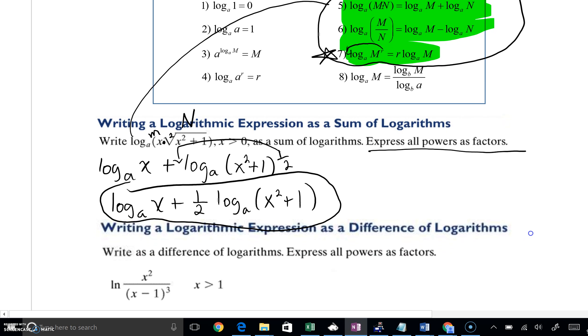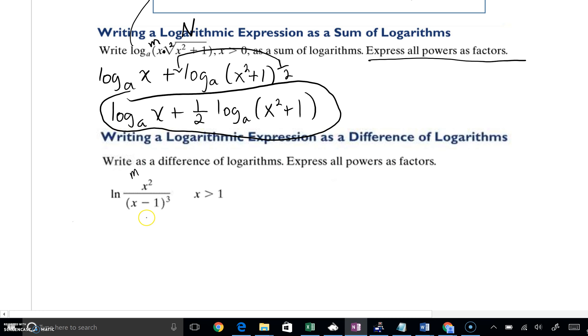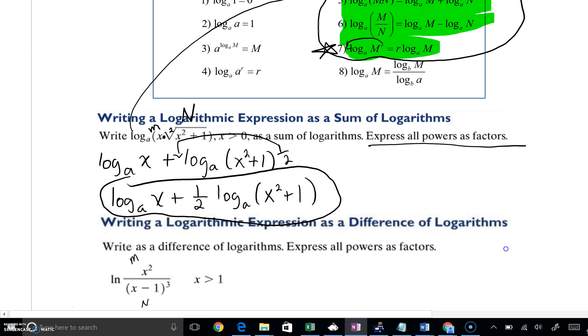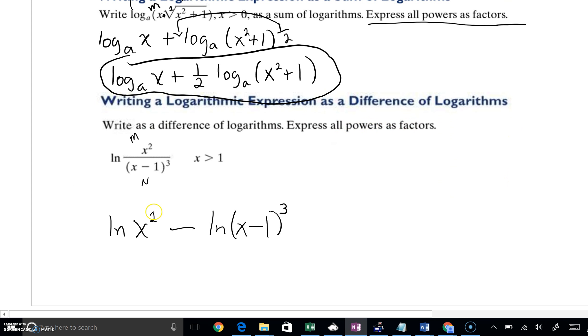We can similarly use property number 6 and write as a subtraction or difference of logs. You can see this at the top of the screen. We've got property number 6 shown. M is pretty much your X squared, your N is down below here. We're going to have natural log of X squared minus natural log of X minus 1 all to the third. So that's really using that top property that we saw at number 6. But again, we need to express all powers as factors. So we're going to take the 2 and bring it down.